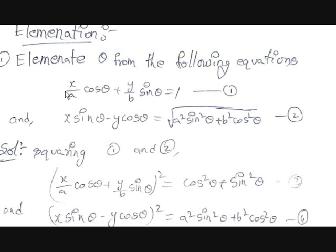The remaining terms give x²·cosθ and x²·sinθ. Taking x² common gives cos²θ + sin²θ, resulting in just x². Now, if we square both equations, equation 1 becomes (x/A·cosθ + y/B·sinθ)² = 1. Note that 1 can be written as cos²θ + sin²θ, which we will use later.